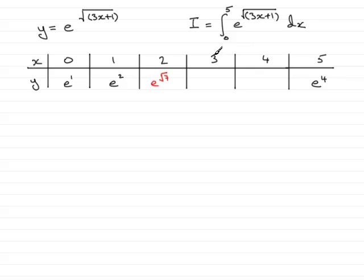Now we substitute x equals 3, so 3 times 3 is 9 plus 1 is 10, so that would be e to the root of 10. Similarly, when you put x equals 4 in you get e to the root of 13. And that was the first part, part A of this question.